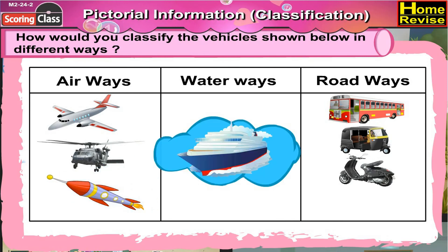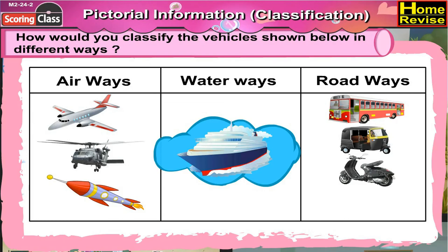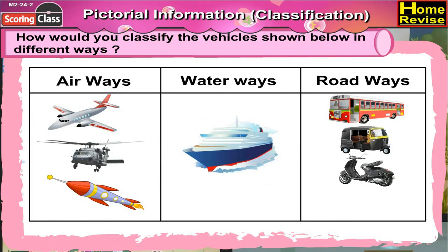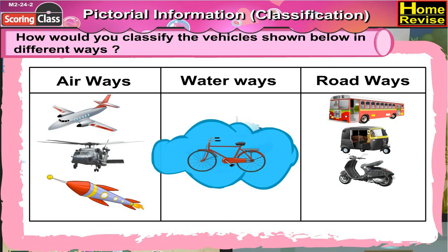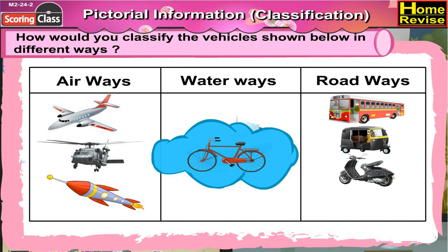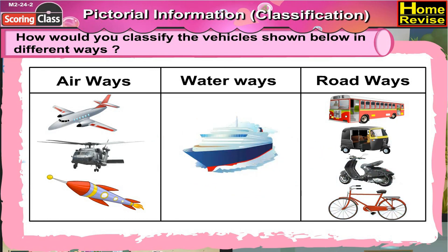Ship — ship sails on the water, so ship comes under waterways. Bicycle — do you like riding a bicycle? Well, you ride a bicycle on the road, right? So it goes under roadways.